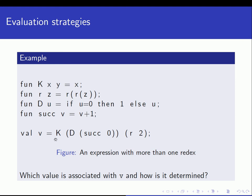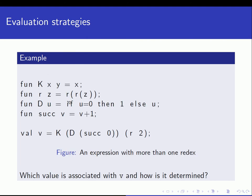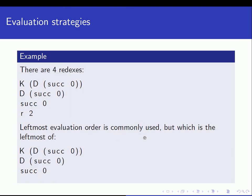The question is which value is associated with v and how is it determined? This expression on the right hand side consists of four redexes - a redex is a reducible expression, something that can be reduced. The first redex is k d successor of zero. Then d successor of zero is another one. The third is successor zero, and the fourth is r of two. So we have four redexes.